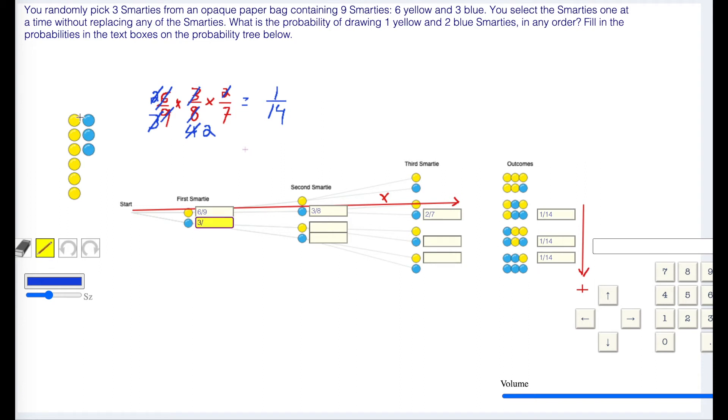Three, or blue, out of 9. Then yellow, we have 6 or yellow out of 8. Then blue, we only have 2 blue because we've already taken this blue. So 2 out of 7.